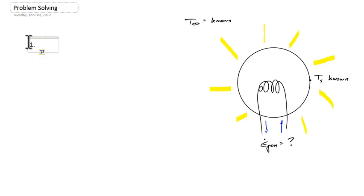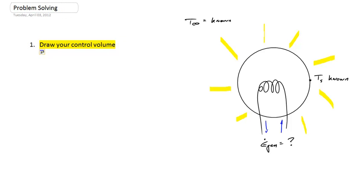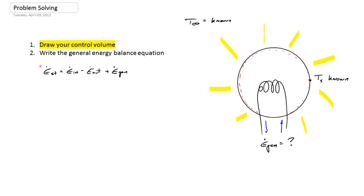The first step for problem solving in general is to draw your control volume — I don't think I emphasize this enough. This means identifying some known volume that you can apply your energy balance equation to. In this case, there's probably some convective flux leaving the light bulb and energy being generated within it. For a steady-state problem, the control volume could just be the surface of the light bulb. The second step is to write the general energy balance equation: energy stored equals energy entering minus energy leaving plus energy generated within the control volume.